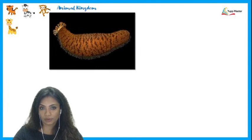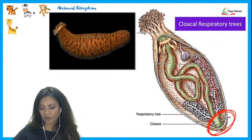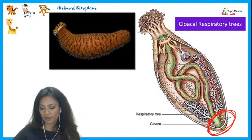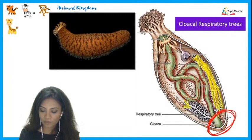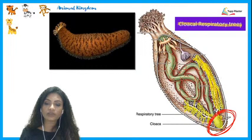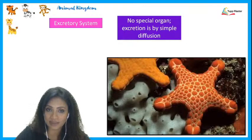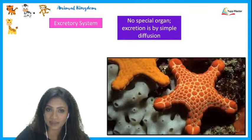Another respiratory structure is seen in cylindrical echinoderms like sea cucumbers. They have a structure called the cloaca, and near it are respiratory trees — so named because they have small branches with tree-like structures at the ends. These are called cloacal respiratory trees and help the organism respire. So echinoderms use papulae and cloacal respiratory trees for respiration.